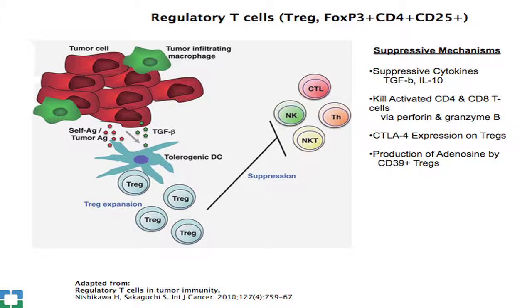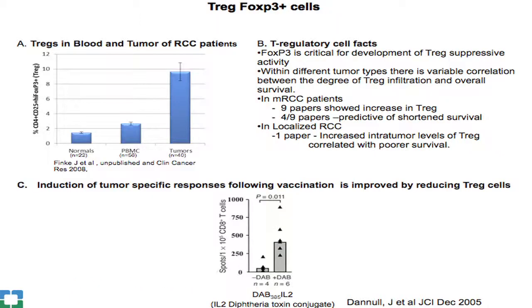T regulatory cells (Tregs) express FOXP3, which regulates their suppressive activity. These cells can come from the thymus into tumors, or naive T cells exposed to tolerogenic dendritic cells and TGF-beta can become Treg-like. There are multiple mechanisms by which they suppress the immune response, with CTLA-4 appearing to be one of the more important components. In kidney cancer patients, there is a modest but consistent increase in Tregs in the blood and within the tumor.